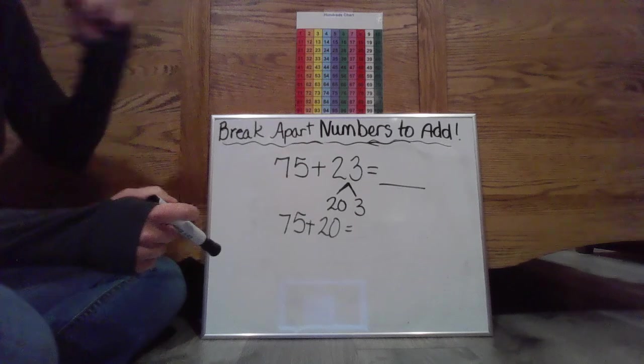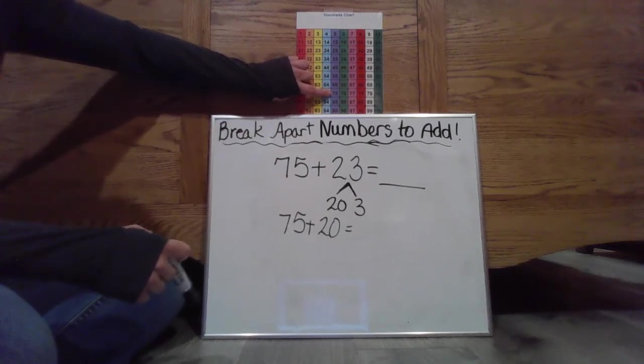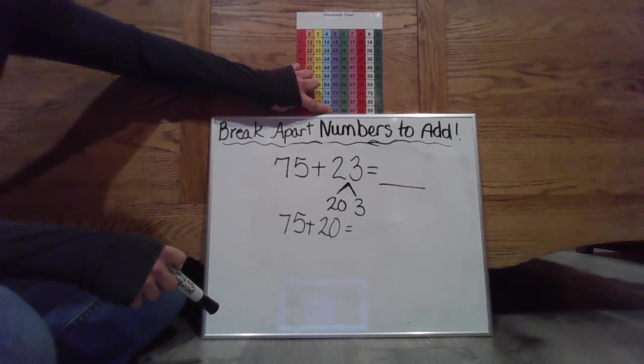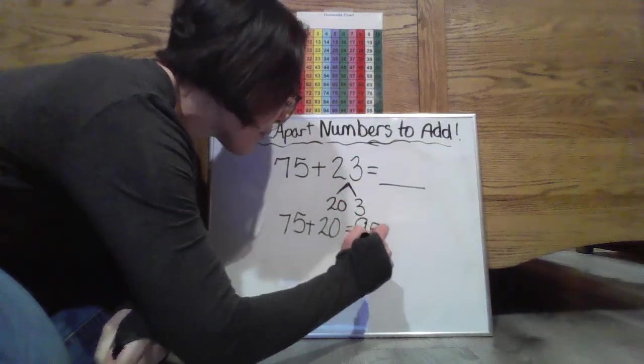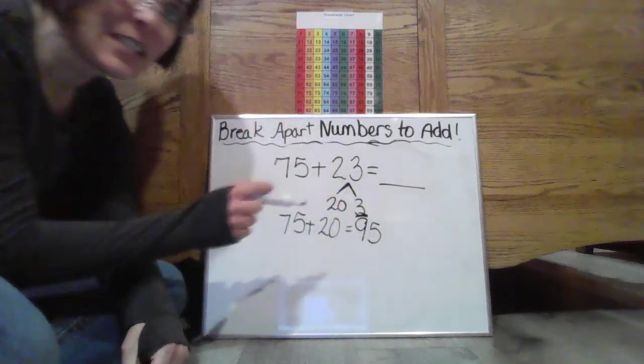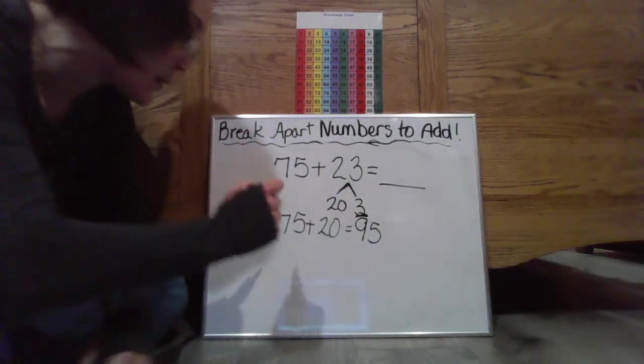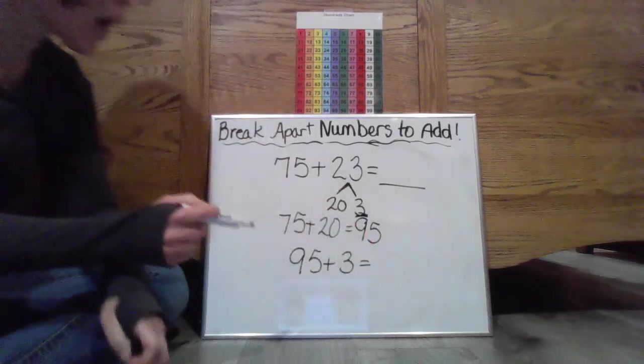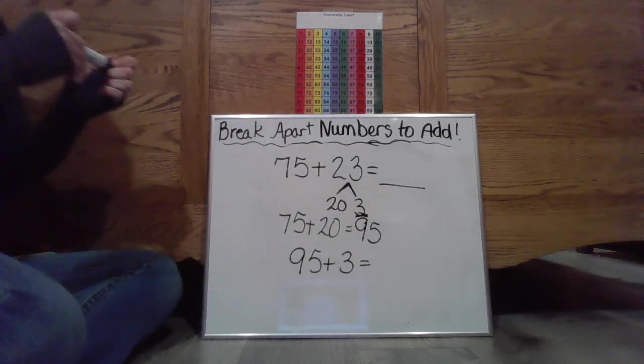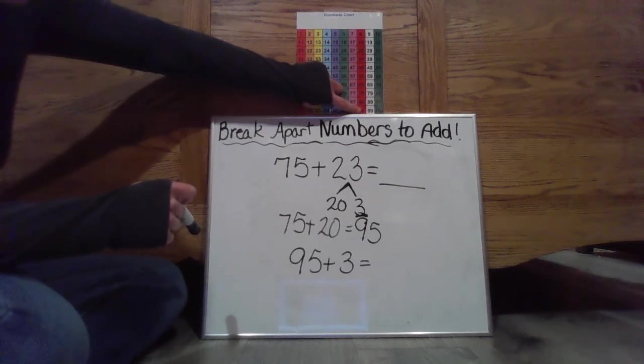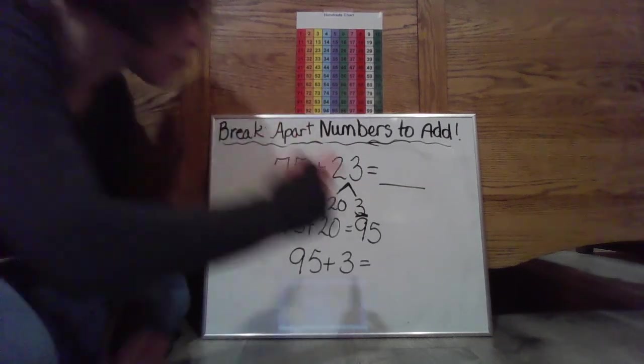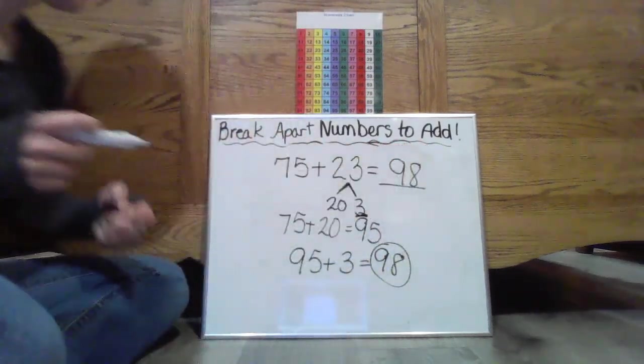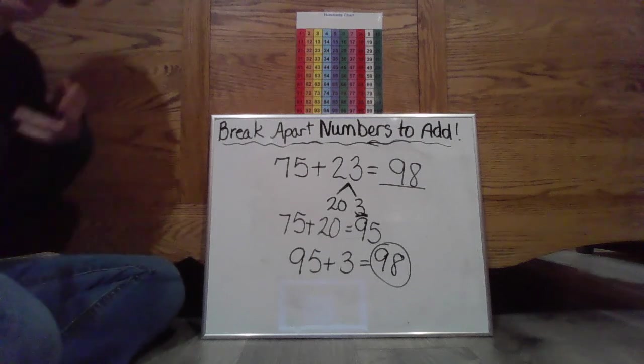So I'm up at 75 right now. I want to hit those two tens, 10, 20, or one, two. Then I'm at 95. Now you know I'm not done yet because I still need to add those three ones. So 95 plus three more ones is going to give me 95, one, two, three. Yep. It's going to bring me to 98. So that's what my total is going to be. So 75 plus 23 is going to give me 98.